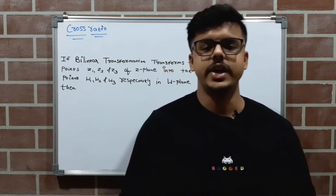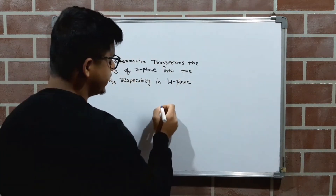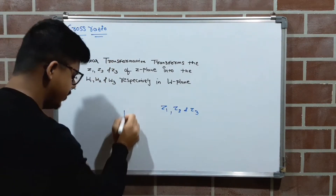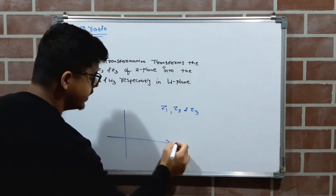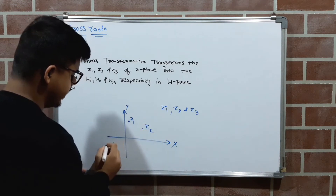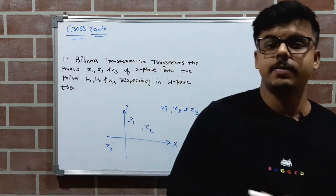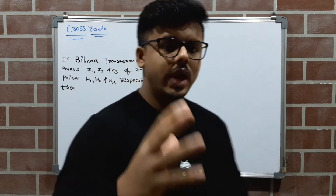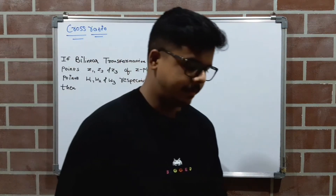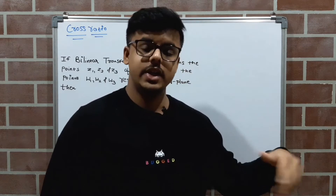Suppose that you have three points — Z1, Z2, and Z3 — in the Z plane. So here we have this Z plane with axes X and Y, and we are placing points Z1, Z2, and Z3. Now you are performing a transformation operation on these three points and getting three different corresponding points in the W plane.